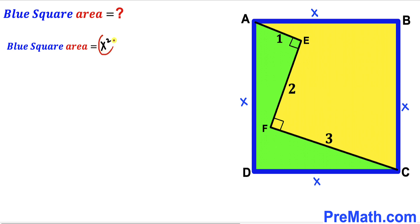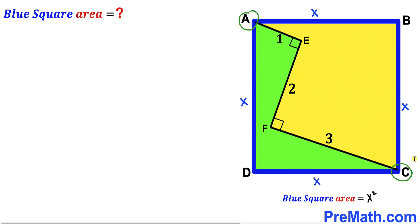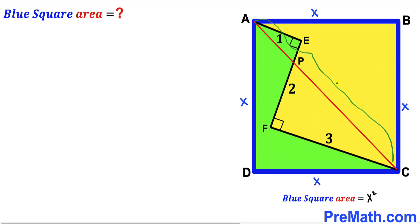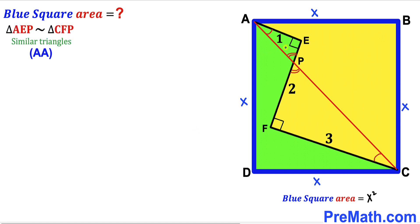Our task is to find the value of X squared. We connect vertices A and C — this diagonal AC intersects EF at point P. We observe that vertical angles at P are congruent, and both triangles AEP and CFP contain a 90-degree angle. Therefore, by the angle-angle similarity theorem, triangles AEP and CFP are similar triangles.